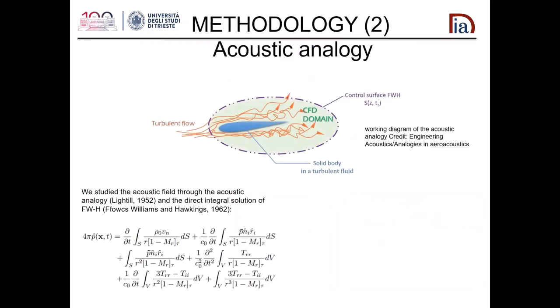The second part of the methodology is the evaluation of the acoustic field. The noise is related to the perturbation of pressure and density, so variation of density must be taken into account. However, we use the incompressible Navier-Stokes equations because we use the acoustic analogy. The acoustic analogy was developed by Lighthill. It consists in recasting the compressible Navier-Stokes equations to find a wave equation with a source term.